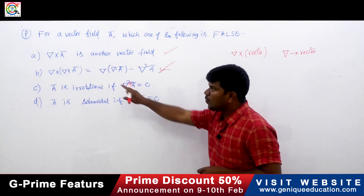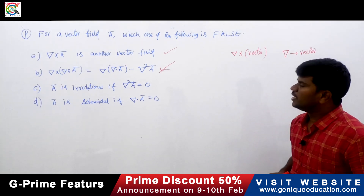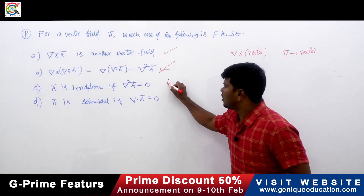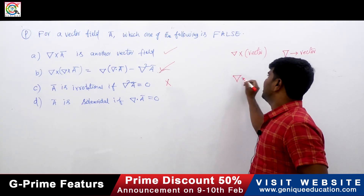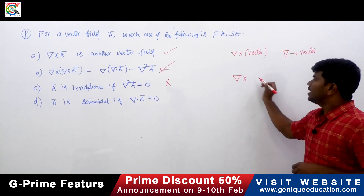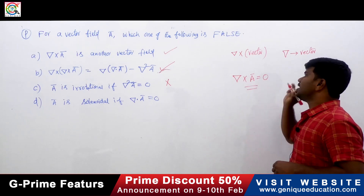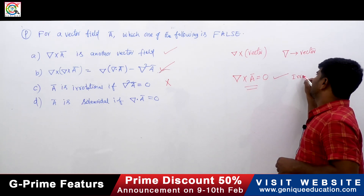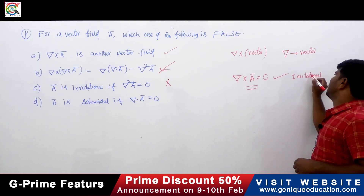The third option states: ā is irrotational if del squared ā is zero. This is wrong. Irrotational means the curl of that vector must be zero — that is the condition for irrotational. So option C is the false statement.